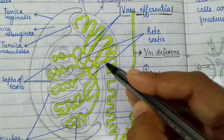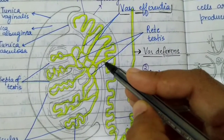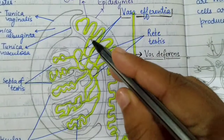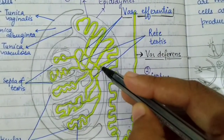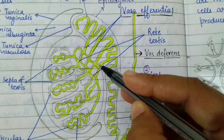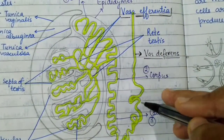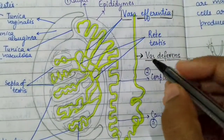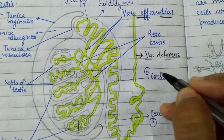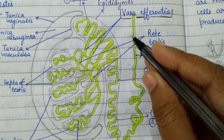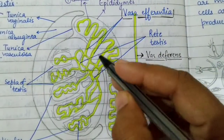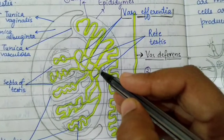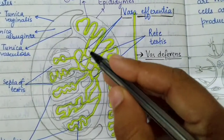The third difference is in size. Vasa efferentia are very fine tubes, but vasa differentia are thick tubes.